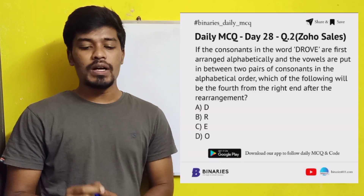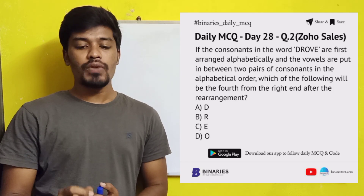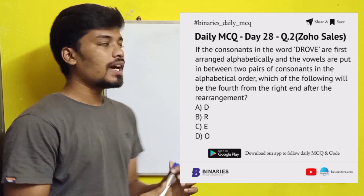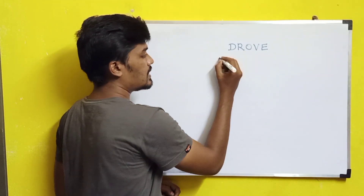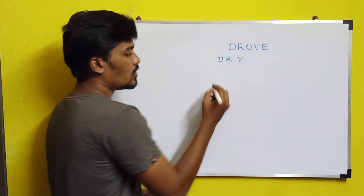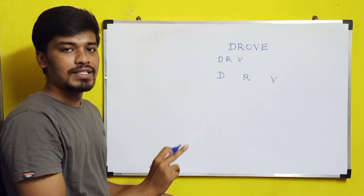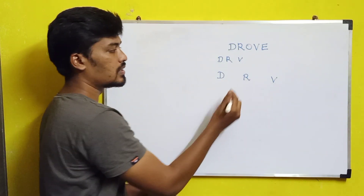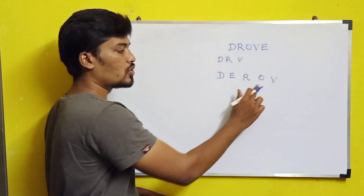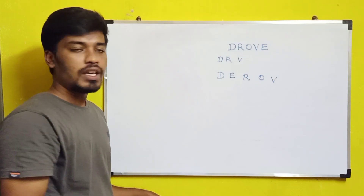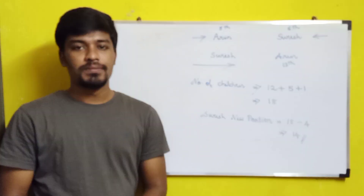The second question: if the consonants in the word 'DROVE' are first arranged alphabetically and the vowels are put in between the two pairs of consonants in alphabetical order, which letter will be fourth from the right end after rearrangement? The consonants in 'DROVE' are D, R, and V, arranged alphabetically as D, R, V. The vowels are E and O, arranged alphabetically as E and O, inserted between the consonants. So the arrangement becomes D, E, R, O, V. Counting from the right: 1, 2, 3, 4 — the fourth letter from the right is E.